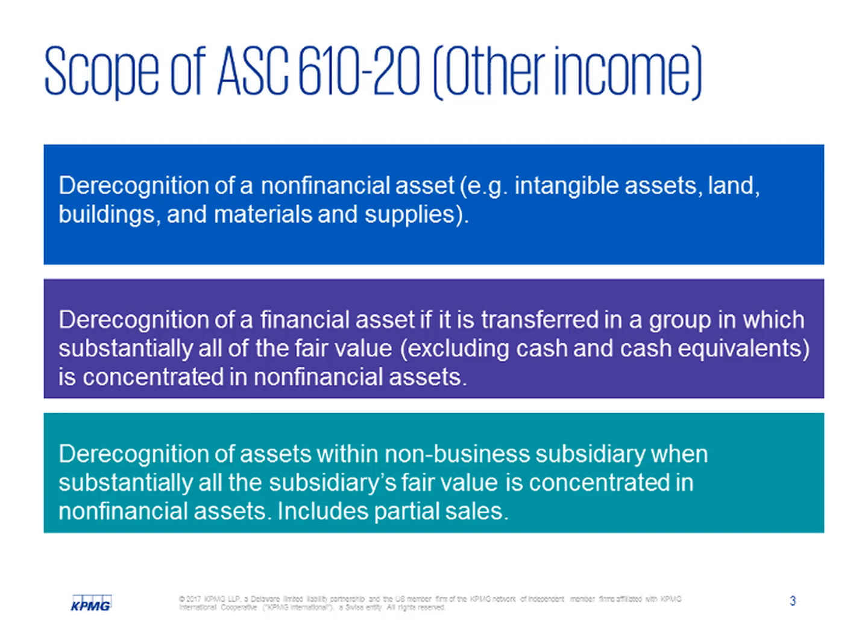Cash is ignored and would not be included for this determination. Substantially all is generally interpreted as 90% in U.S. GAAP. The ASU also applies to derecognition of assets within a non-business subsidiary when substantially all the subsidiary's fair value is concentrated in non-financial assets. This also applies when the seller retains a non-controlling interest in the transferred non-financial asset or subsidiary that is not a business — for example, partial sales.